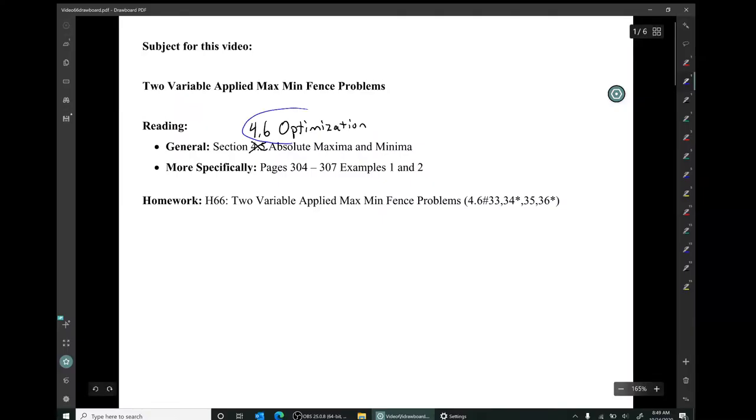This material is from section 4.6, optimization. More specifically, it is similar to content in the book on pages 304 to 307, examples 1 and 2. The corresponding homework is this collection of four problems. Two of them are in the MyLab system, two of them are not. Problems 34 and 36 are not in the MyLab system, but they are in the book and they're worth doing.